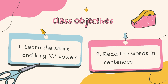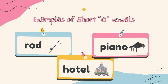The class objectives for today: number one will be learning the short and long O vowels. I decided to focus on this because for some of you, during the reading assessment, there was a bit of a struggle. And number two, I want you to be able to read the words in sentences. So we'll start off with the example of short O vowels first.